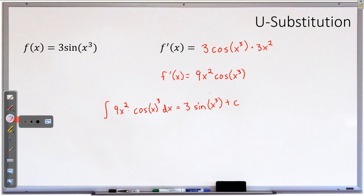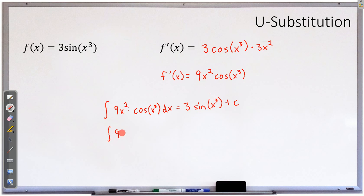I wrote something wrong there — that cubed should be on the inside of the parentheses: cosine of x cubed. Sorry about that. So how could I go from here to there if I didn't already know the answer? Well, I don't know the anti-derivative of cosine of x cubed — that's an issue. I know the anti-derivative of cosine of x, but not x cubed. So you realize that x cubed is the issue.